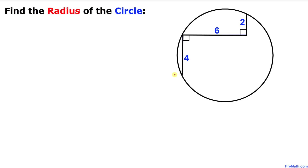Welcome to pre-math. In this video tutorial we are going to calculate the radius of a given circle whose chord is 4 units, and then we see a 90 degree angle and another line segment of 6 units. Once again we have a 90 degree angle and then we have a line segment of 2 units, as you can see in this figure.